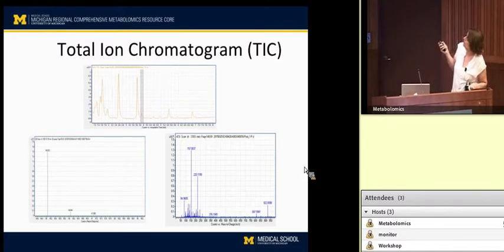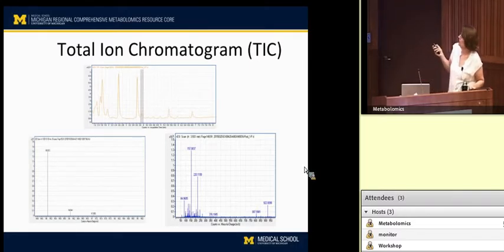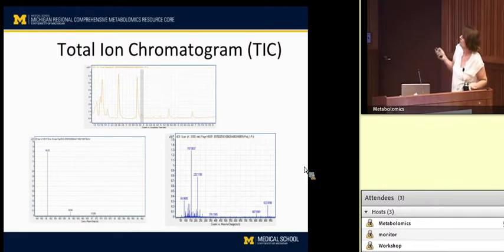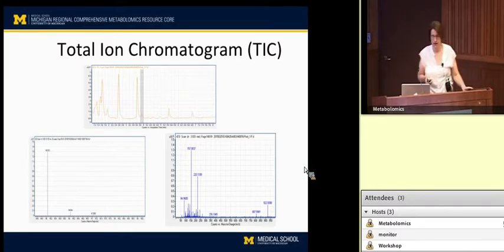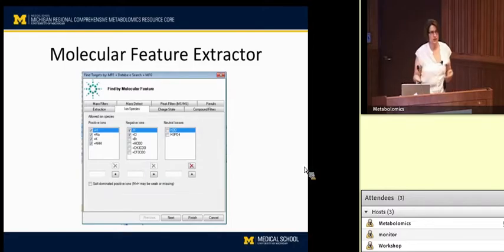I wanted to emphasize the mass range we're looking at when doing untargeted metabolomics. At any given time coming off the HPLC chromatogram, you're going to see a lot of ions, anywhere from 50 up to 1000 Daltons. There's a lot of information buried in that. So how do we get that information out and reduce the data to make it manageable?